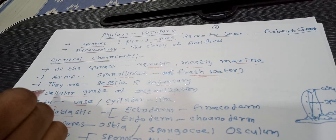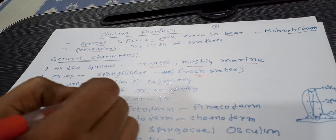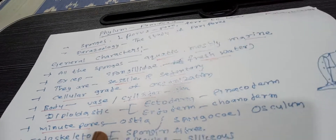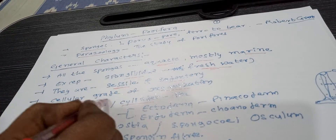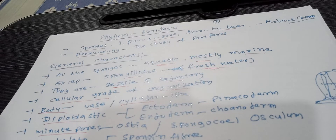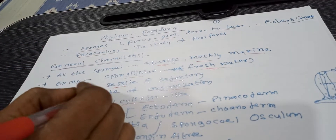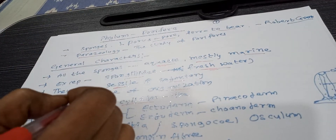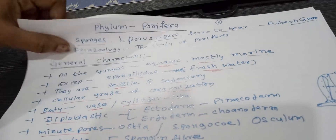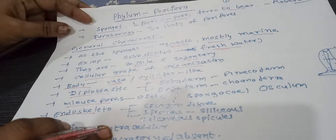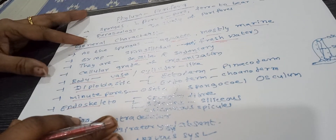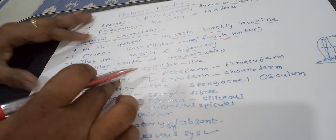They exhibit cellular grade organization. The body shape is vase or cylinder-like.